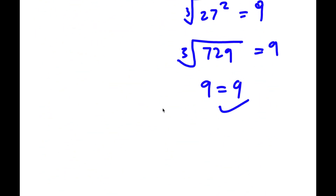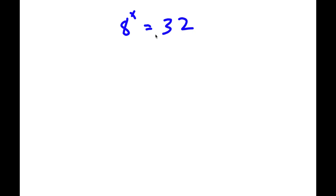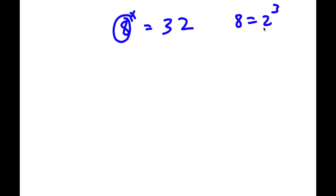Alright, now I have a similar problem. Let's see if you guys can solve it. The problem is 8 to the power of x is equal to 32. Pause the video and attempt to solve this. So, what I'm first going to do is rewrite 8 as 2 to the power of 3, because 8 equals 2 to the power of 3.